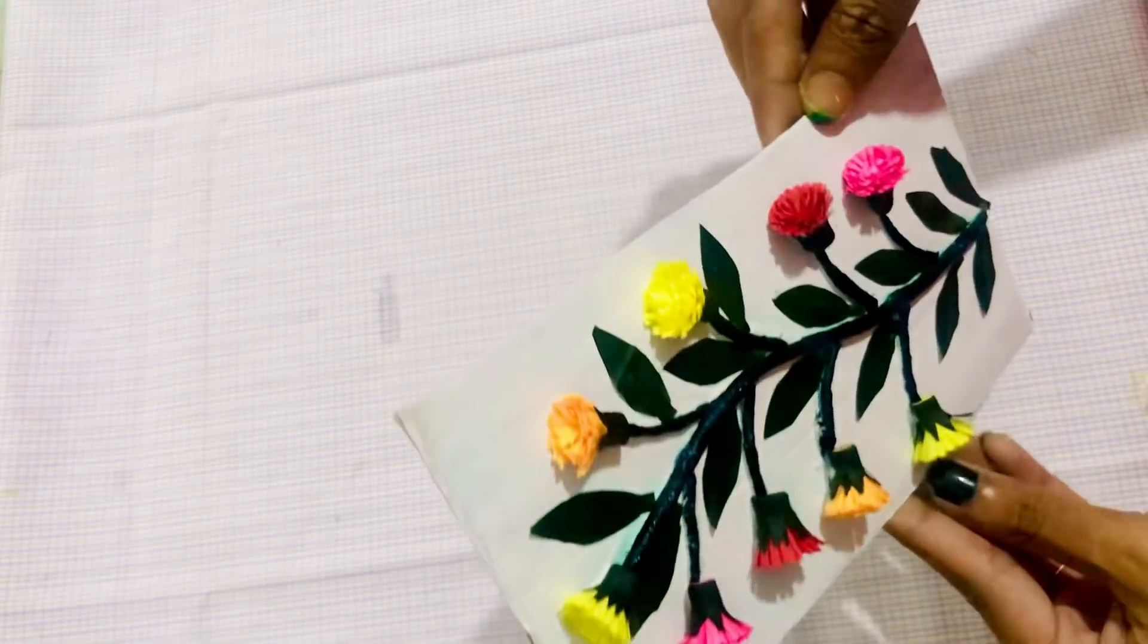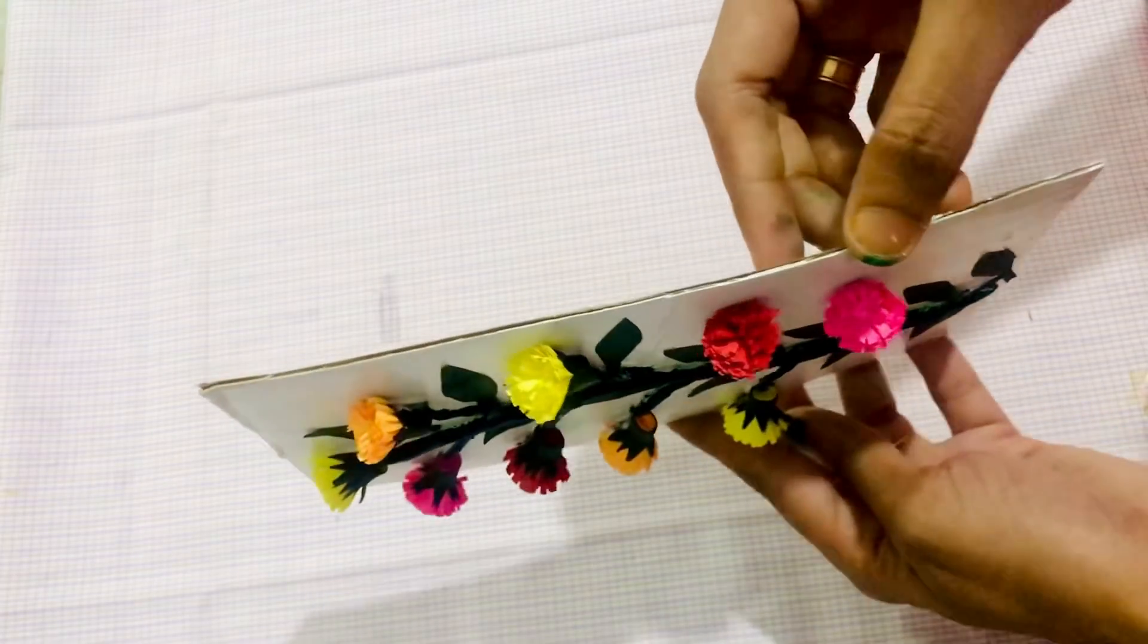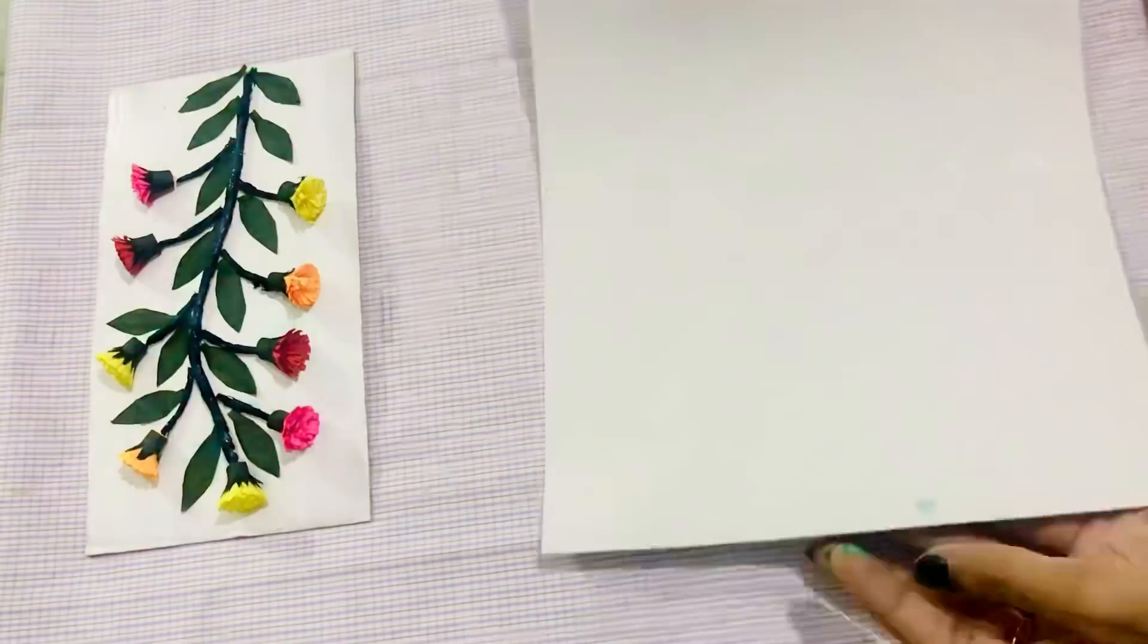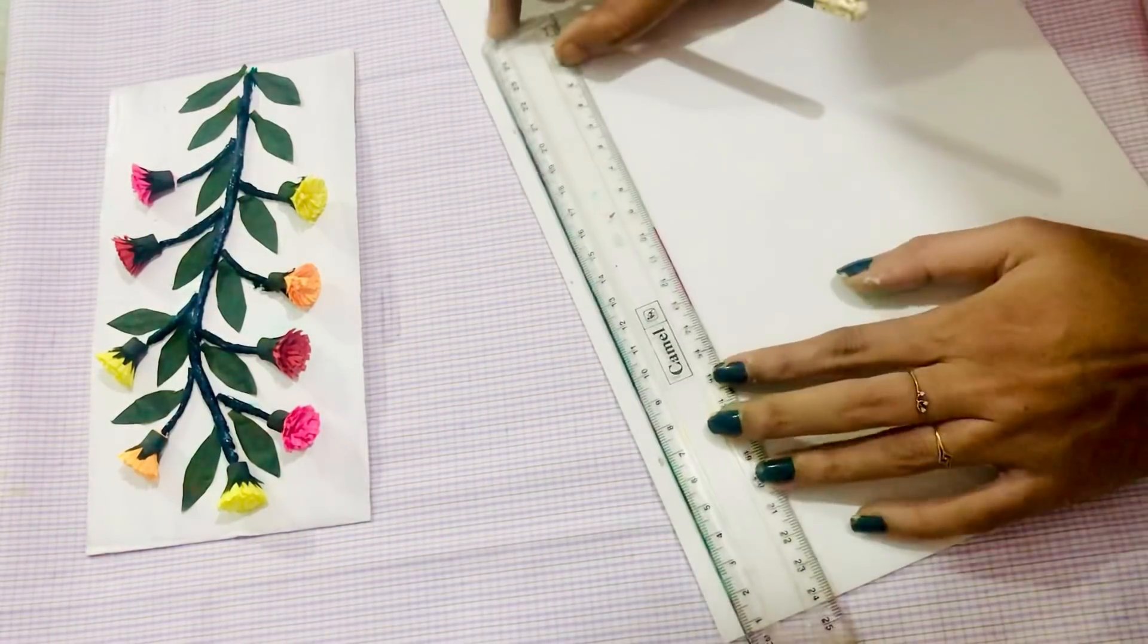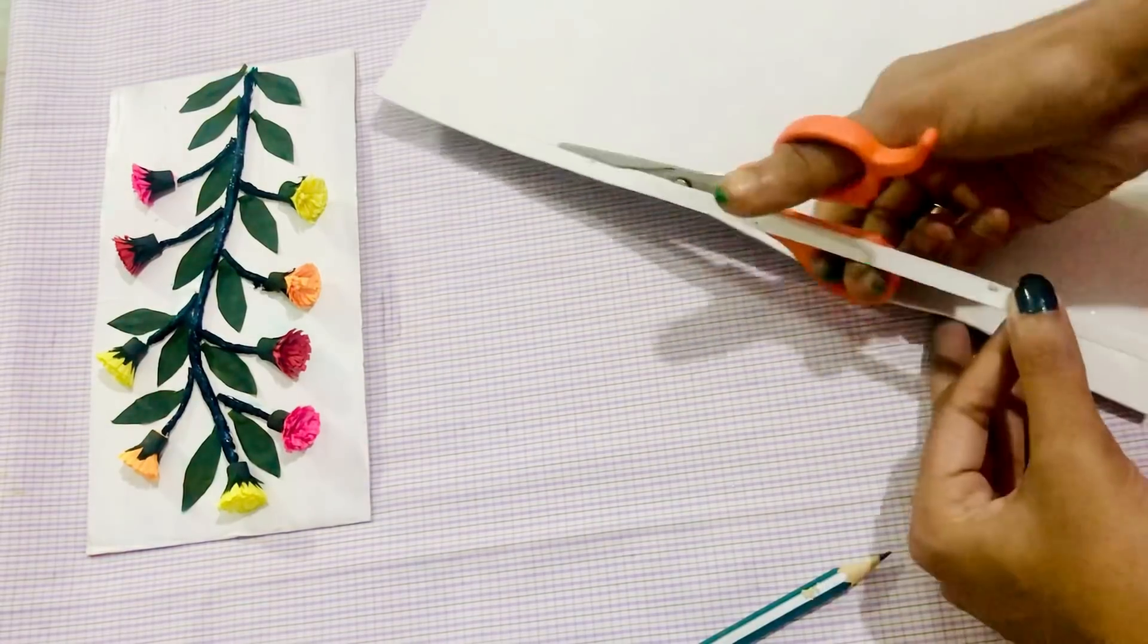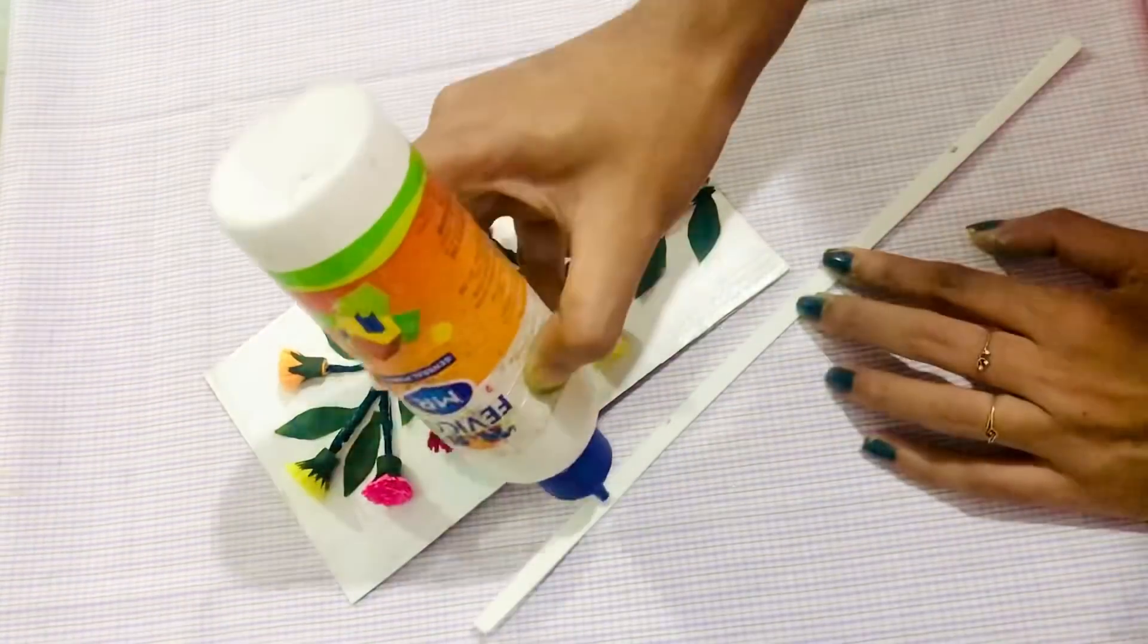Now, you can put a border on the side. You can use paper tubes. I have a glitter foam sheet. I will cut these pieces. I will cut it in half a centimeter.